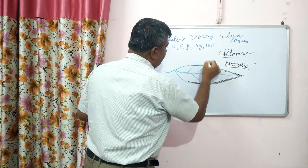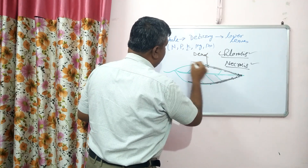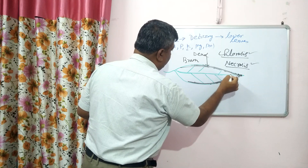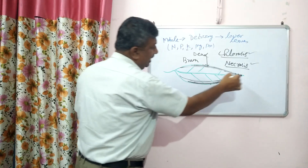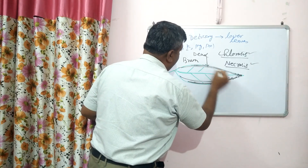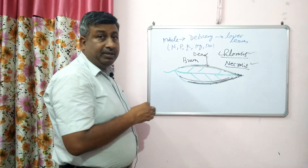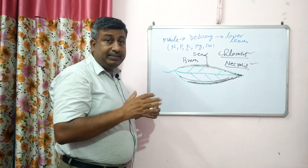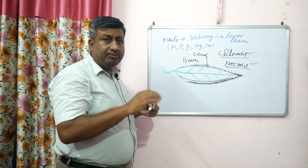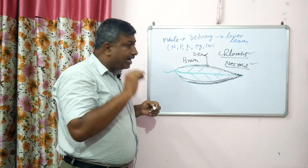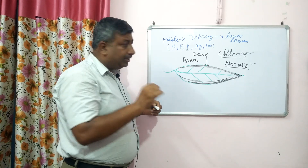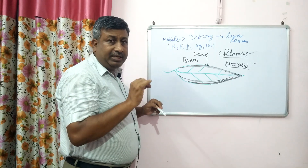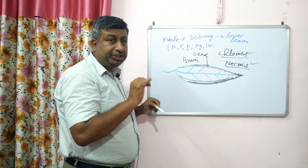The affected part becomes brown and dead, and this deficiency proceeds toward the base of the leaf, but the midrib remains intact. This is the peculiar deficiency symptom of potassium, and it occurs on older leaves.